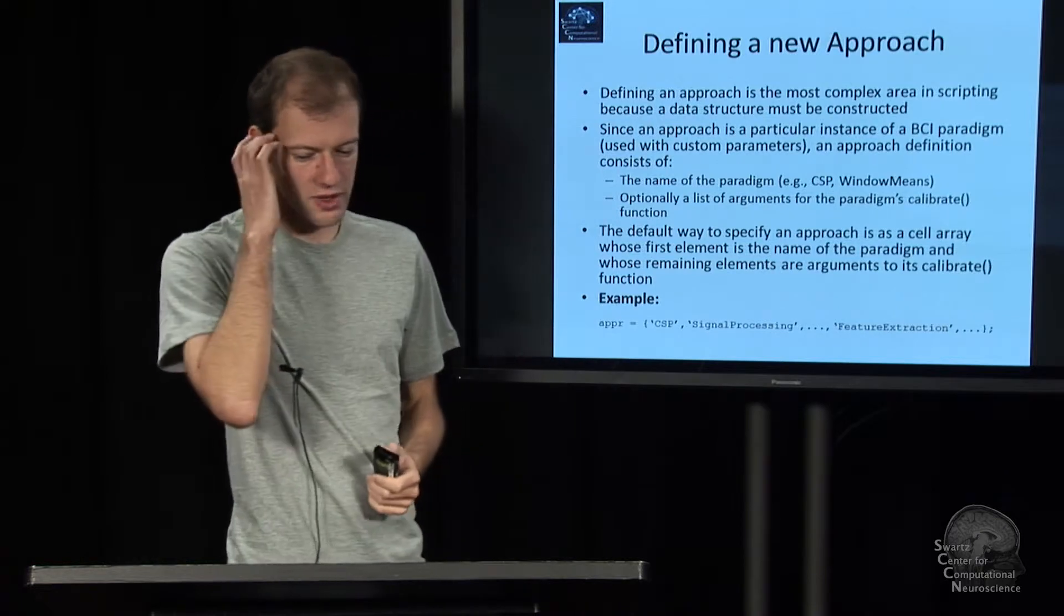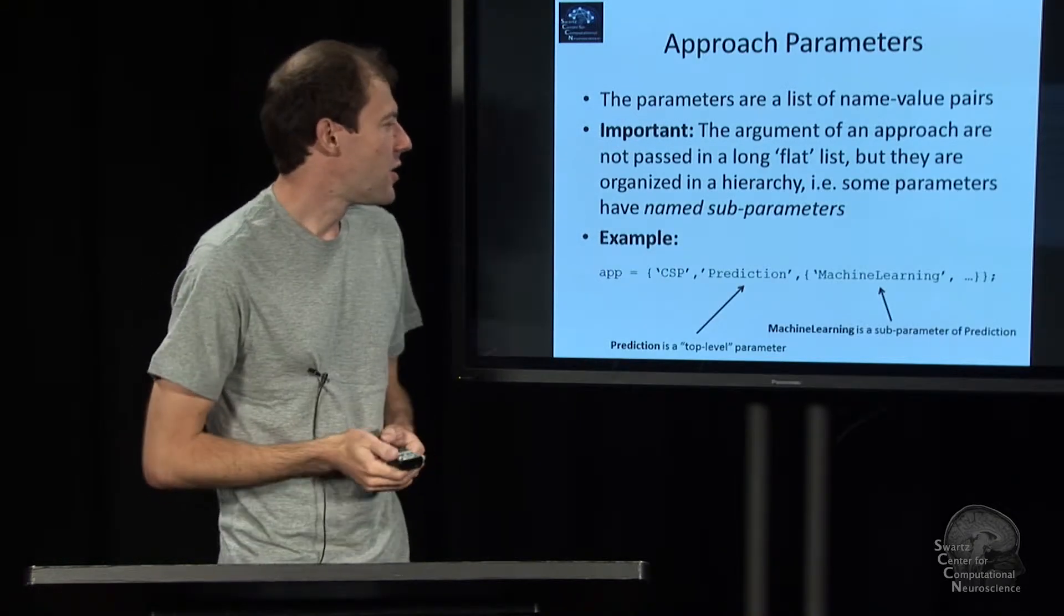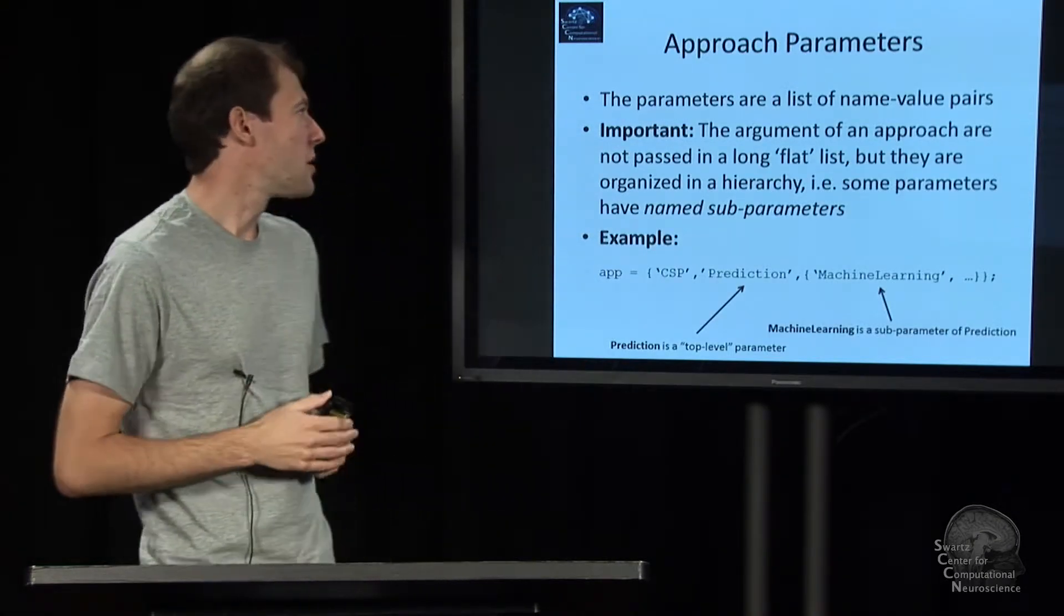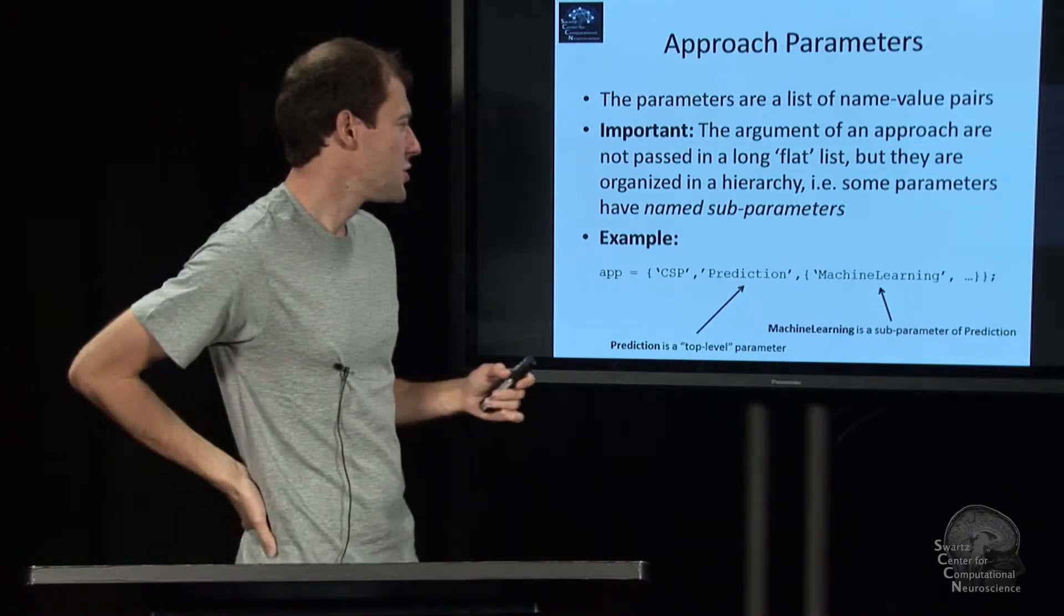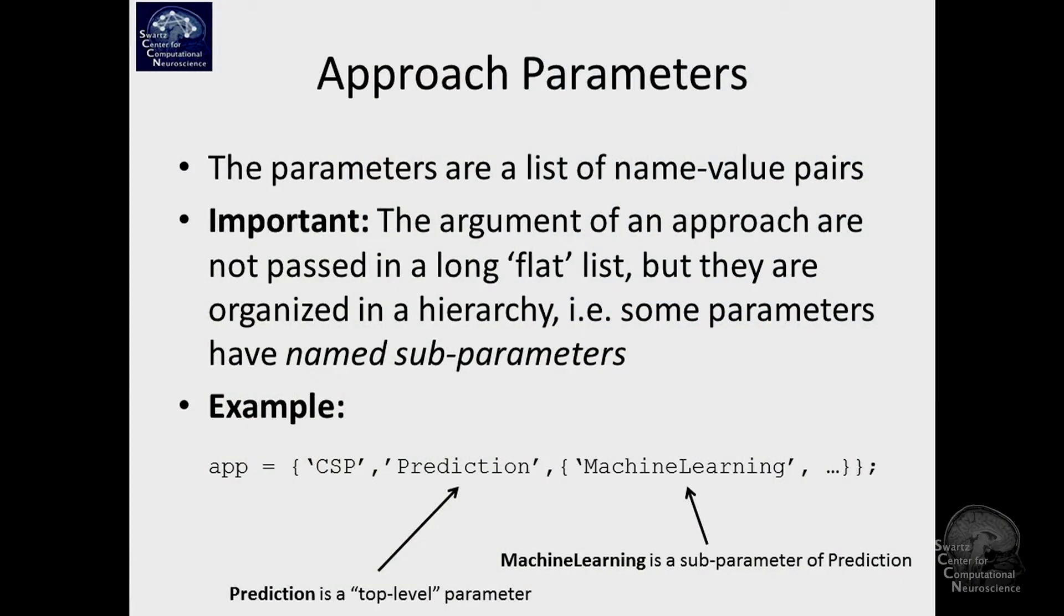Now we're talking about the parameters themselves. They are generally lists of name value pairs, everything else would be too confusing basically. Usually the parameters are nested into parameters and subparameters just to keep it organized.